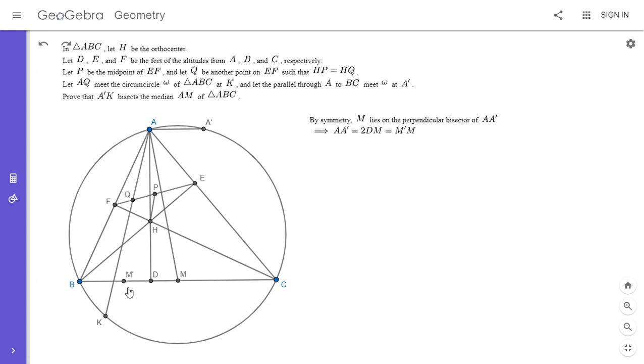And so if A, A' is equal to M'M, and at the same time, so those segments are equal in length and they're also parallel. So I'm going to write this out. So if you have two segments that are the same length and they're parallel, then they form a parallelogram.